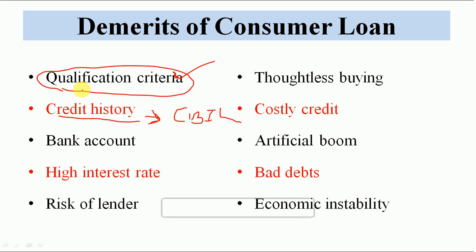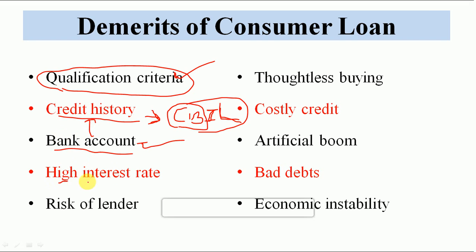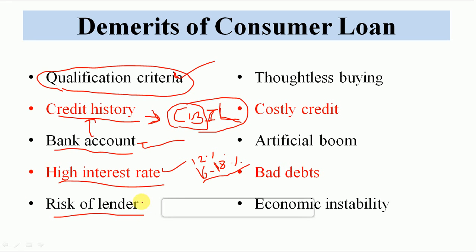The CIBIL firm is the Credit Information Bureau India Limited. It checks the individual's record — how many bank accounts you have, if you have a loan and your installments are on time, your score is higher. Generally, a government employee will get a loan at 12%, private bank employees at 16%-18%-20%, depending on your history and employability — kitna aap kamate ho, kitne saal se aap kama rahe ho.